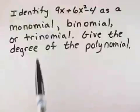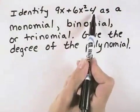We look at the variable and identify the highest power. So let's look at our polynomial, which is 9x plus 6x squared minus 4.